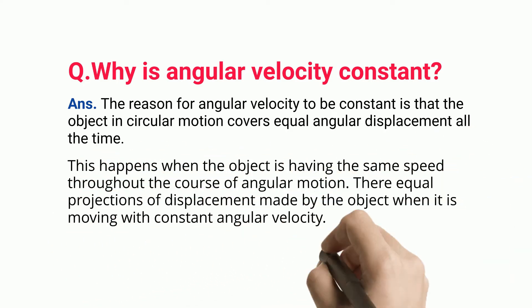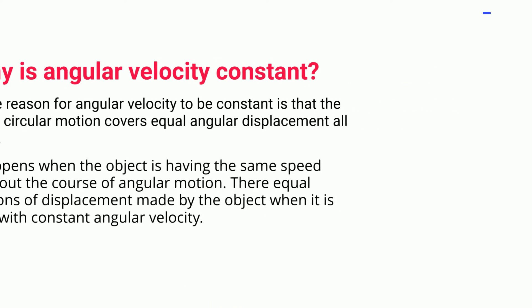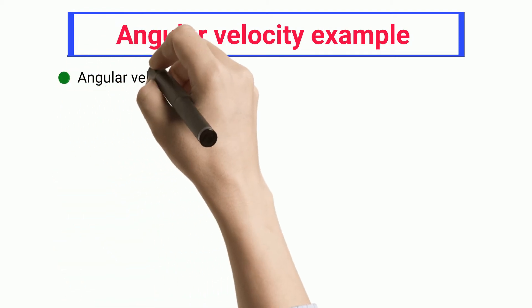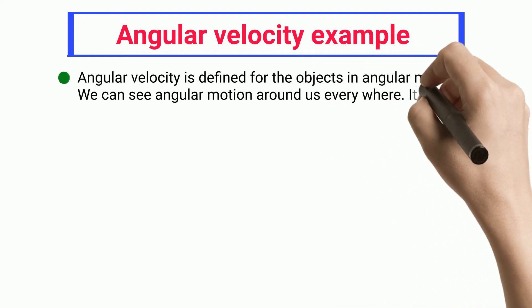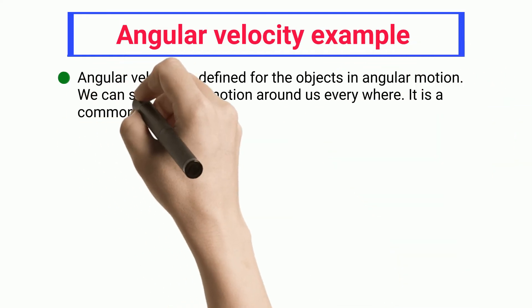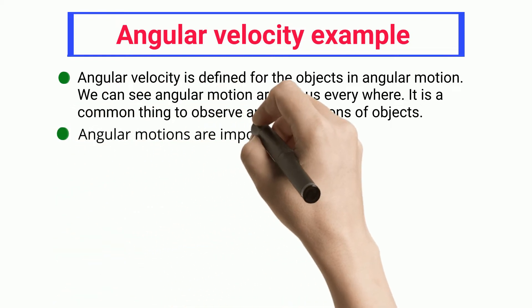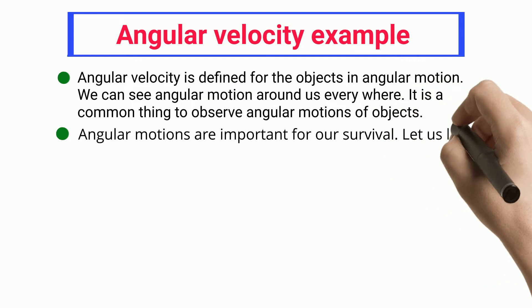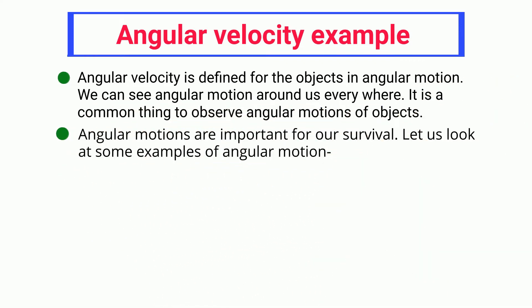Angular velocity examples: angular velocity is defined for objects in angular motion. We can see angular motion everywhere around us — it is a common thing to observe. Angular motions are important for our survival. Let us look at some examples of angular motion.